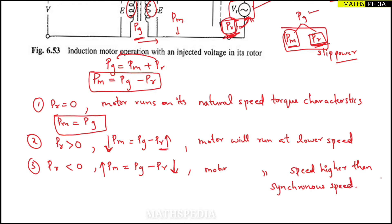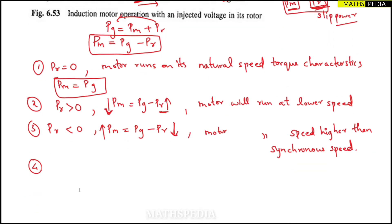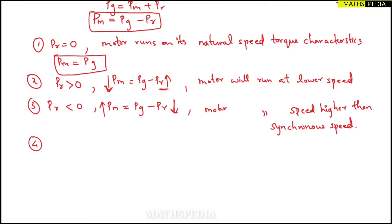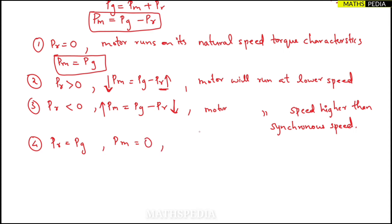Case 4: When PR equals PG. Then PM = PG − PR = 0. When PM is zero, the speed will become zero.